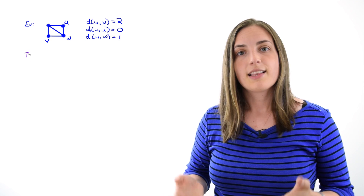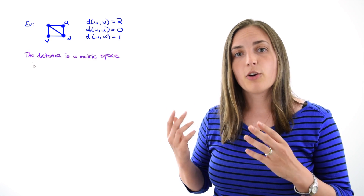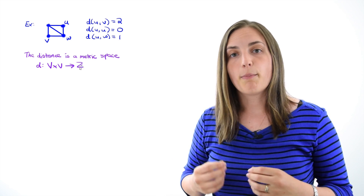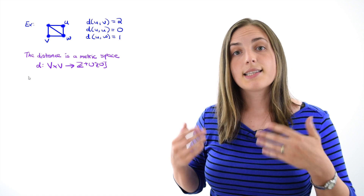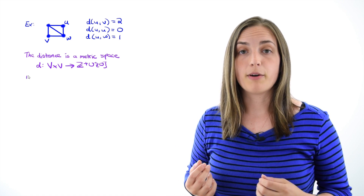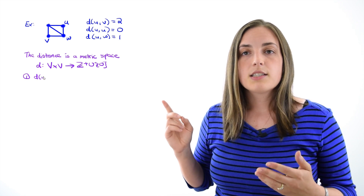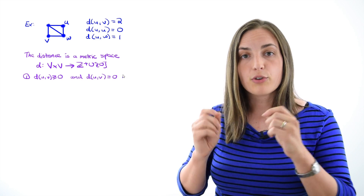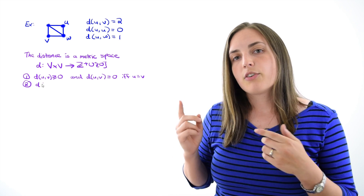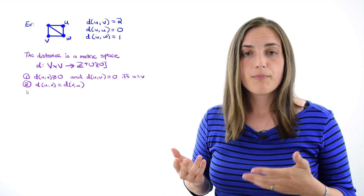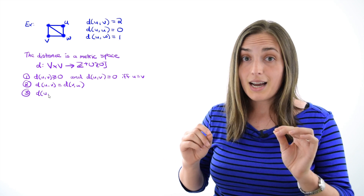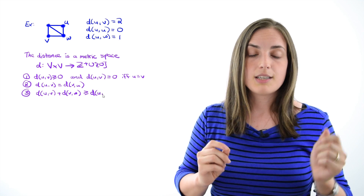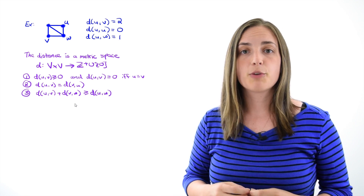You may be interested to know that distance defines a metric space. We think of the distance as a mapping from the vertex set Cartesian product with the vertex set to the set of all non-negative integers. Distance satisfies three properties: first, d(u, v) ≥ 0, and equals zero if and only if u and v are the same vertex; second, d(u, v) = d(v, u); and third, d(u, v) + d(v, w) ≥ d(u, w) — the triangle inequality. Make sure these facts make sense to you, and you should be able to prove them yourself.